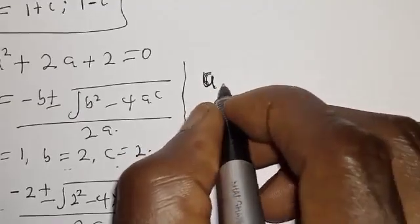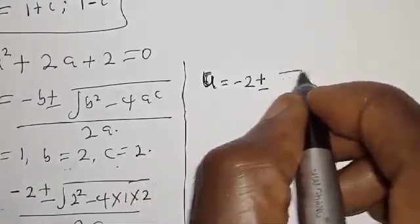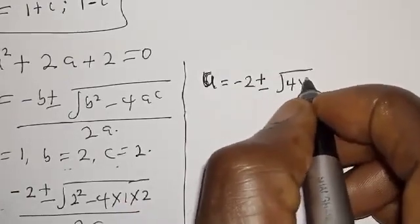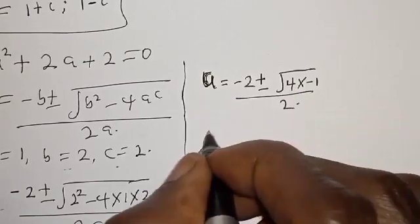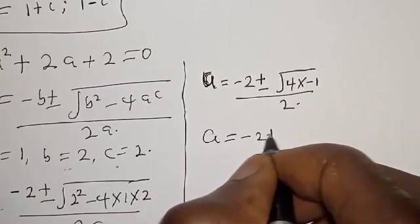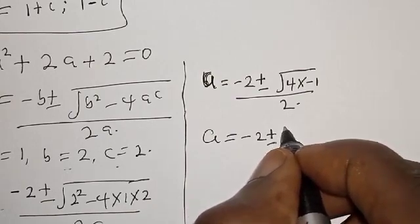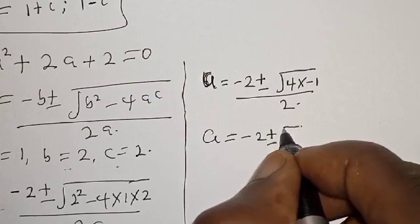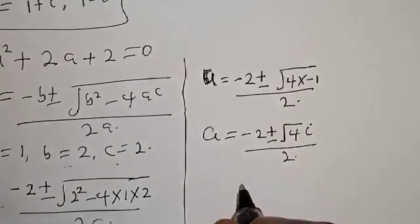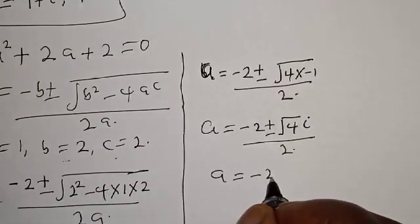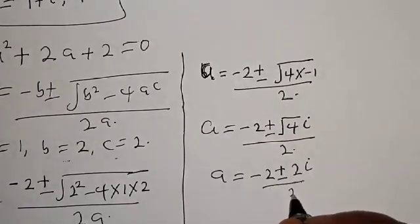A is equal to minus 2 plus or minus square root of 4 multiplied by minus 1, over 2. Then we have A is equal to minus 2 plus or minus square root of 4i over 2. Therefore we have A is equal to minus 2 plus or minus 2i over 2.